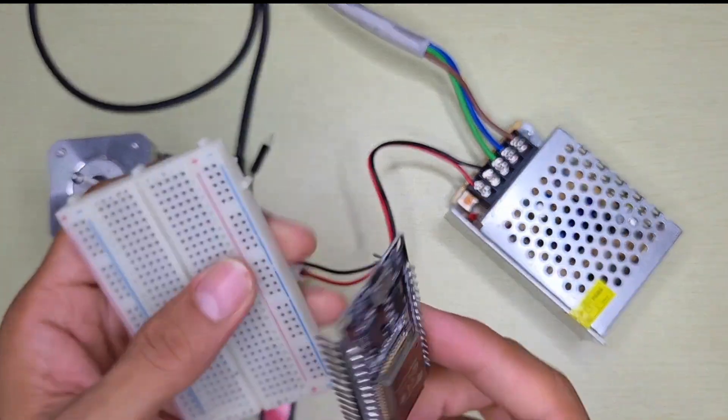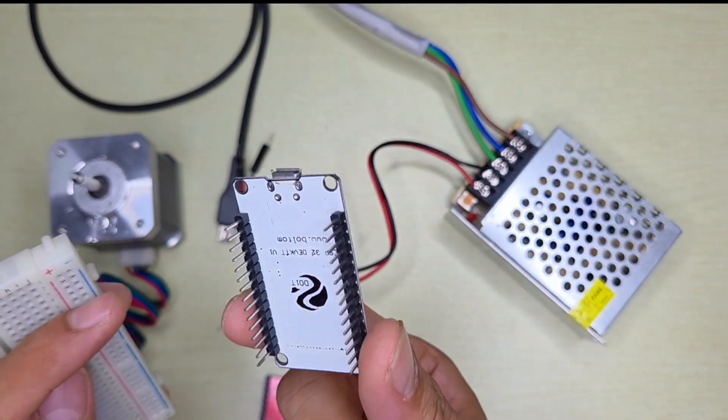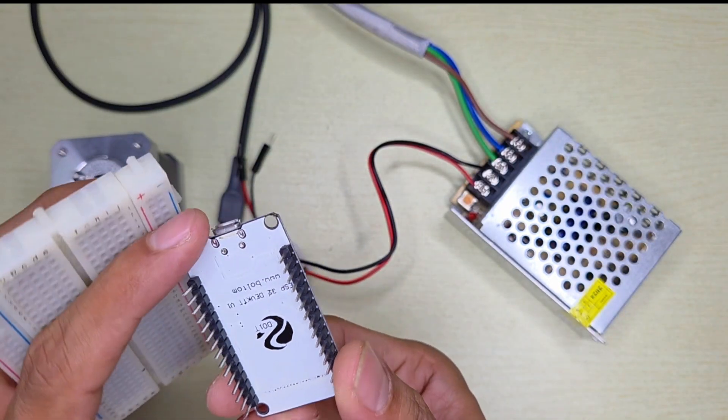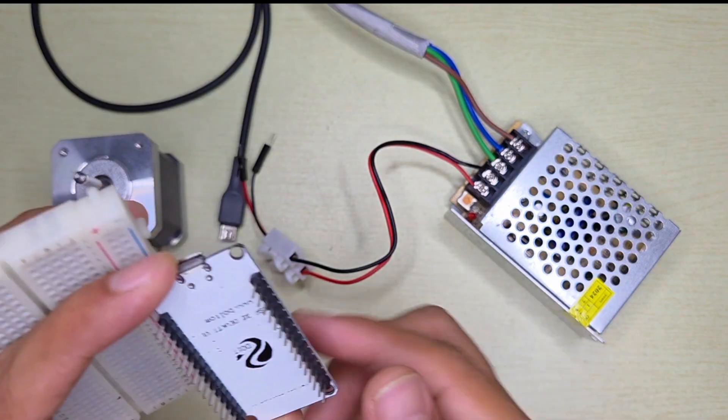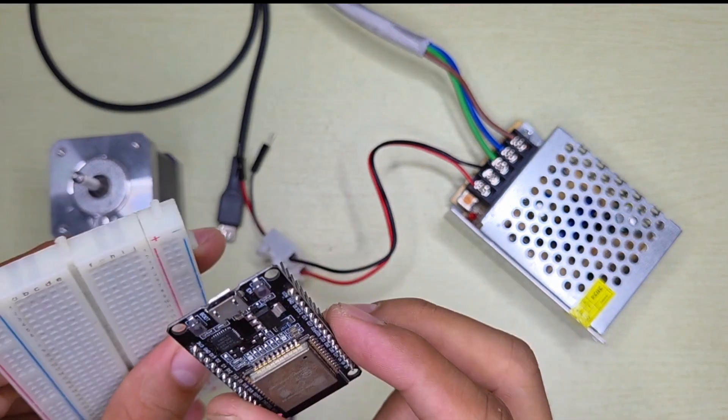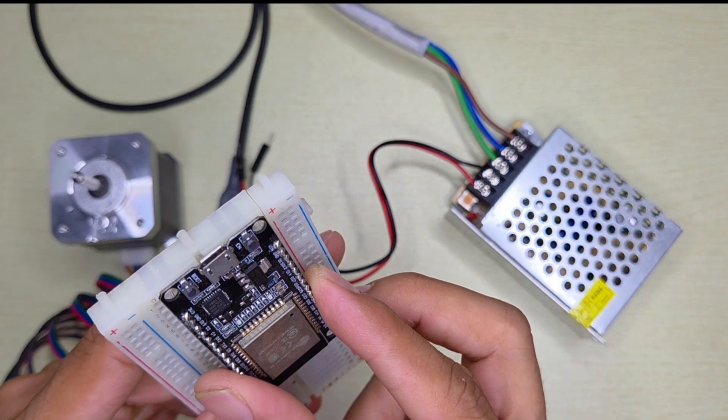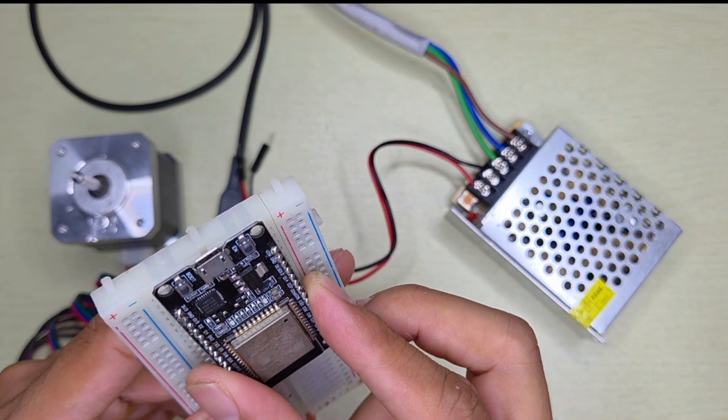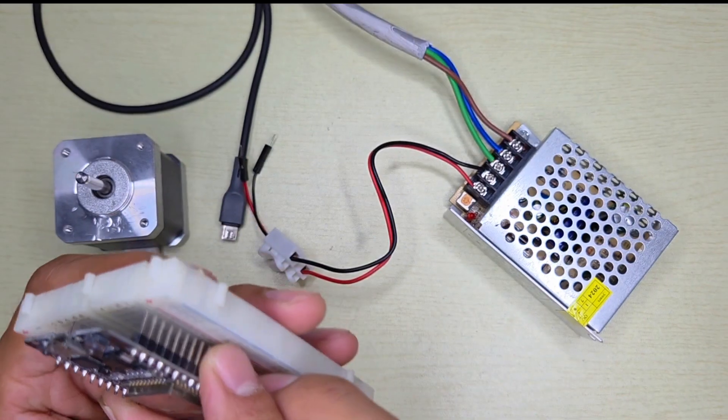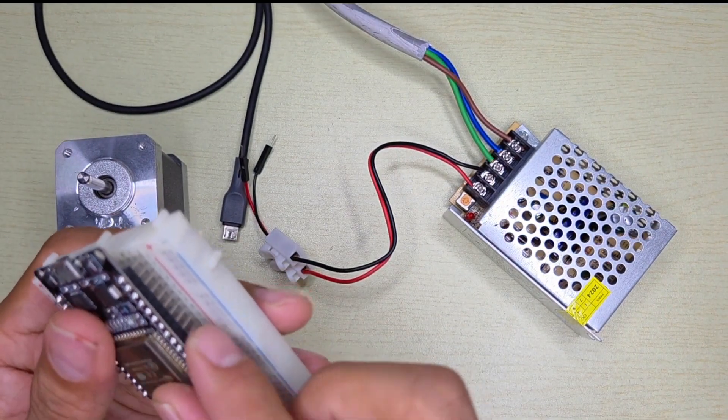Here's the ESP32. Make sure that you know which model you are using because this is very important once you upload the code. You need to follow your ESP32 model. I'm using ESP32 DevKit V1, and here I'm going to plug it into a breadboard.